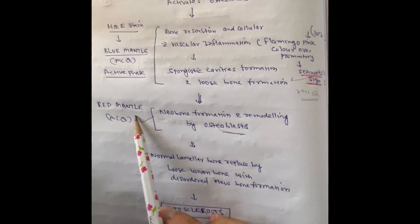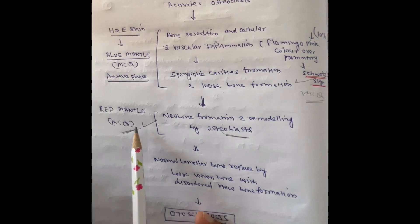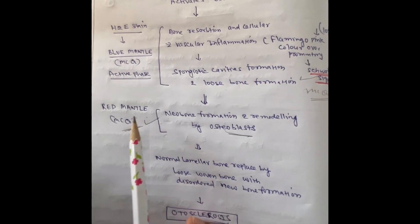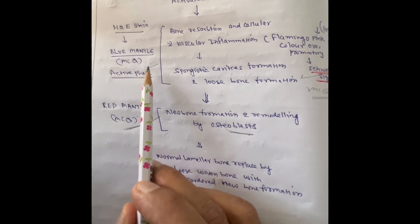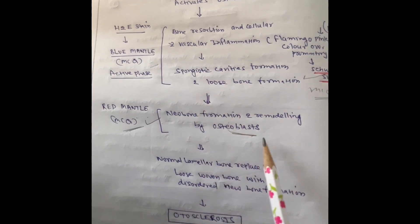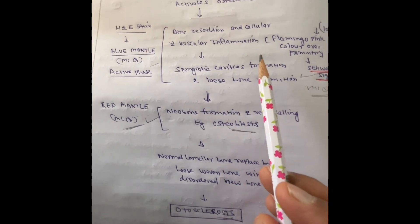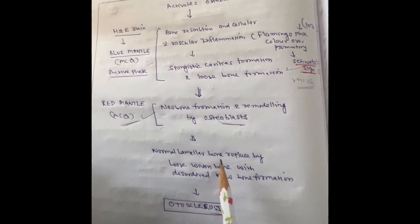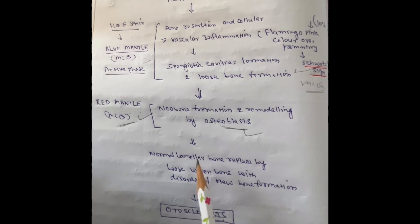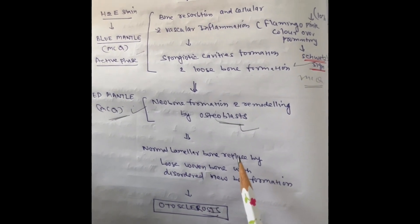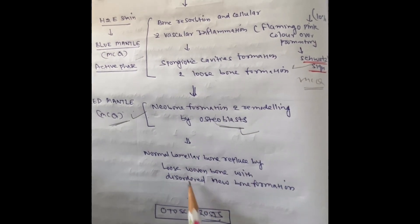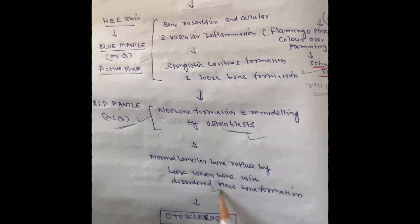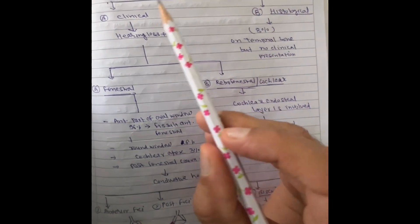During the active stage, the promontory is more vascular and shows Schwartze sign. After this active stage, there is new bone formation and remodeling by osteoblastic activity. If you stain during this inactive or advanced stage, there will be a 'red mantle sign' — the foci appear red with Masson's trichrome stain. This disease ultimately leads to normal lamellar bone being replaced by loose woven bone with disordered new bone formation, which fixes the stapes over the oval window.